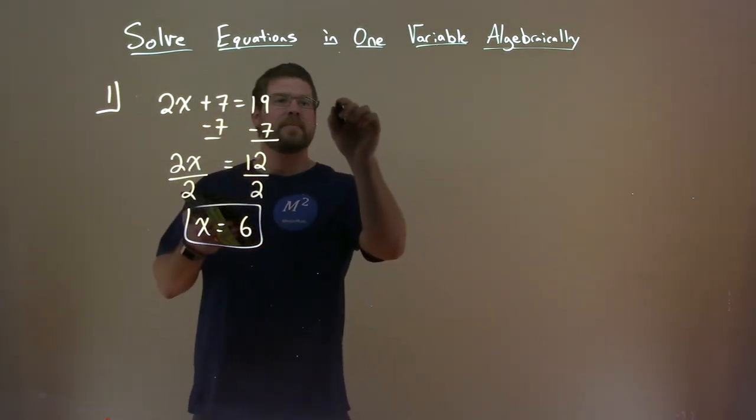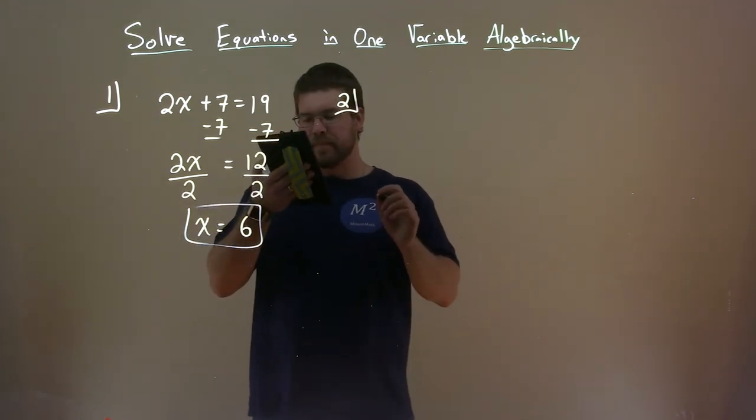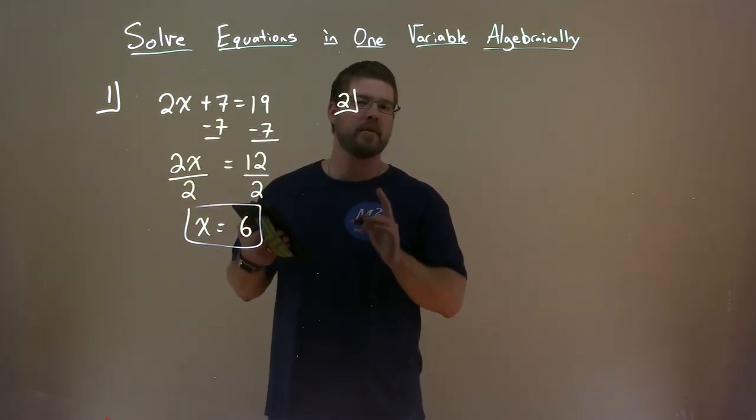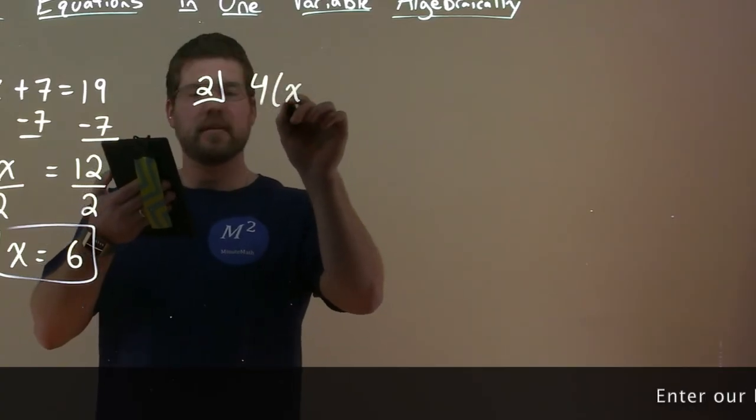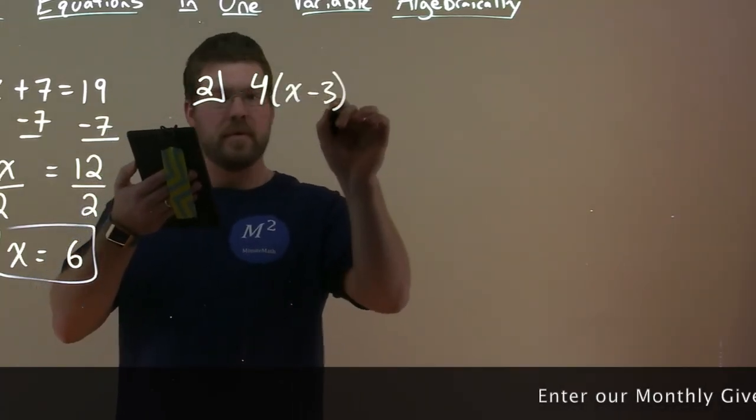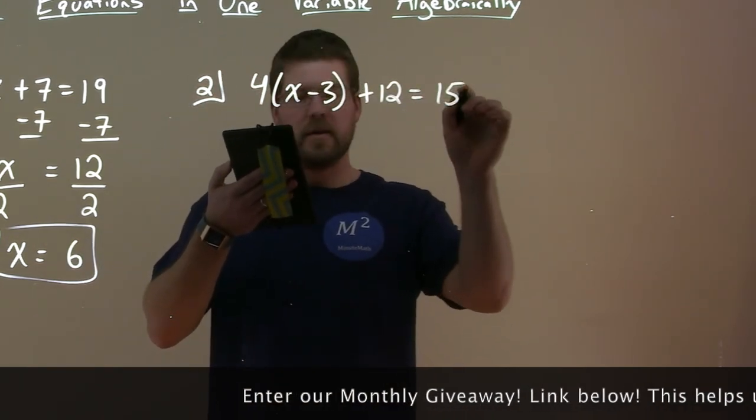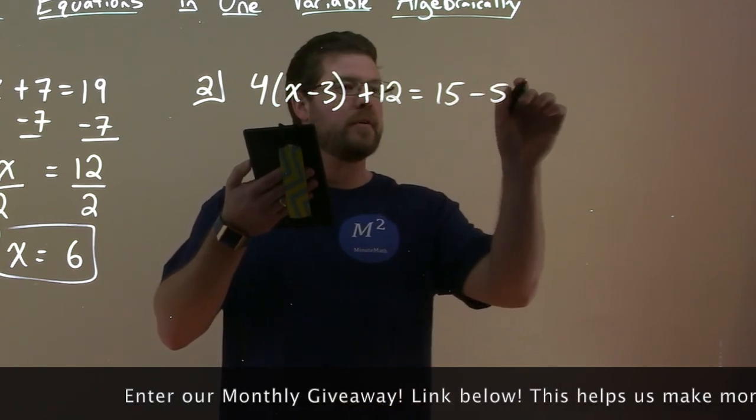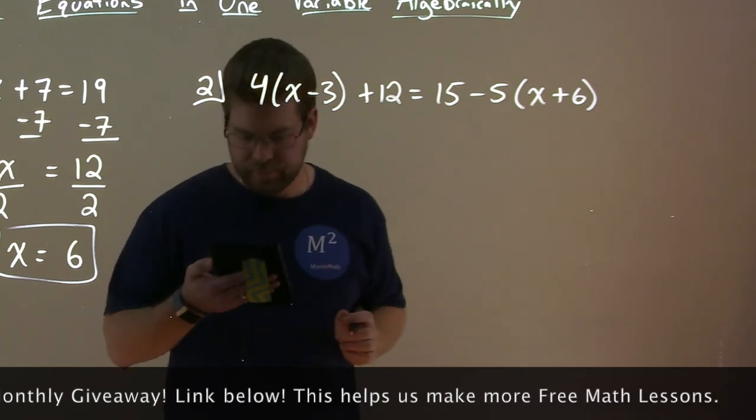So let's try another one. Number 2. Let's try this one. Well, the variable in this one is different—it appears on both sides. 4 times x minus 3 plus 12 equals 15 minus 5 times x plus 6.